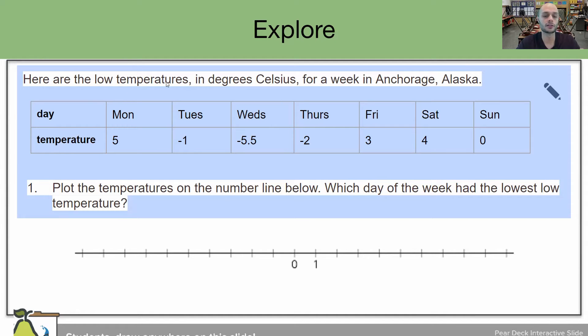They're saying, here are the low temperatures in degrees Celsius for a week in Anchorage, Alaska. So this table has days, it has temperature. We have Monday, Tuesday, Wednesday, Thursday, Friday, Saturday, Sunday, and the temperatures: 5, negative 1, negative 5.5, negative 2, 3, 4, and 0.